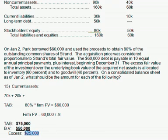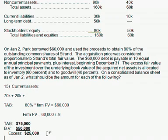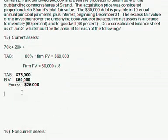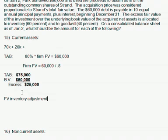We found excess, and that's what we needed before we can figure out how much we're going to adjust inventory by. We're going to adjust inventory by 60% of the $25,000. So let's cruise on down and make our adjustments. The fair value inventory adjustment — 60% of $25,000 — is going to be $15,000.